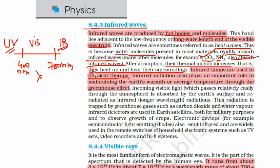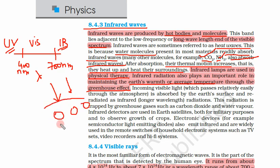Infrared lamps are used in physical therapy for treating injuries. Infrared radiation also plays an important role in maintaining Earth's warmth through the greenhouse effect. When energy from the sun enters the Earth, CO2 and other molecules absorb and trap this heat. If CO2 decreases, the Earth cools down; if it increases, the Earth heats up. That is why we must maintain the amount of CO2 in the environment, as increasing CO2 will make the Earth warmer and warmer.